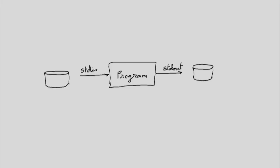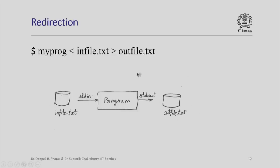What it means is that the text input will now come from infile.txt and the text output will go out to outfile.txt. In short, this is how redirection will be implemented. Our program which reads data from stdin will now instead read it from infile.txt, and our program which produces output on stdout will actually write it to outfile.txt.